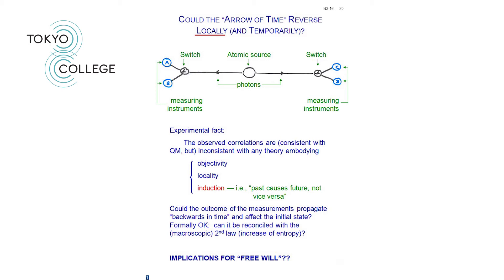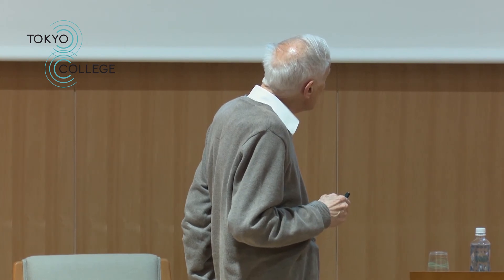Well, there are all sorts of reasons why we might not want to throw away objectivity or locality. So how about contemplating the idea that sometimes, for example, in this kind of situation, induction fails? In other words, there might be a causal influence coming from the future back to the source in this experiment. Well, this turns out to be formally okay, but then you get a very nasty question about whether it can be reconciled with the macroscopic second law, the increase of entropy.